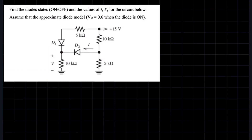Hi friends, this is another basic diode problem. Here it is asking to calculate the current flowing through diode D2 and voltage across a resistor. The diodes are connected in a random fashion. We will use the constant voltage drop model, where when the diode is conducting, the forward voltage drop is 0.6 volts, as already mentioned. Let's solve this question quickly.